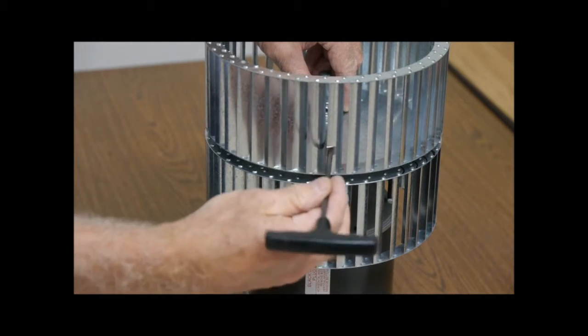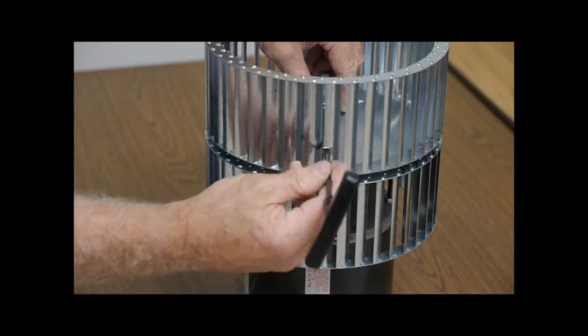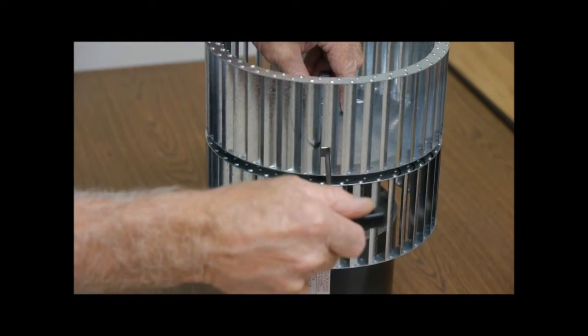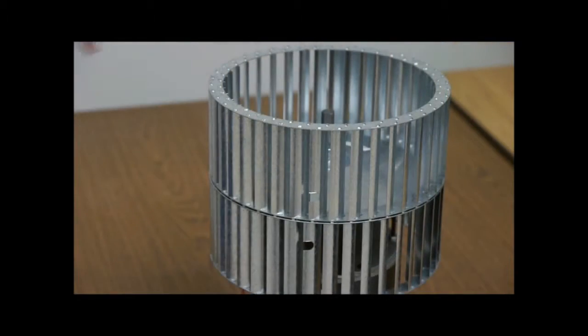Maintain a gap of about one sixteenth of an inch between the two wheels so that they won't rub. Tighten the set screw on the second wheel.